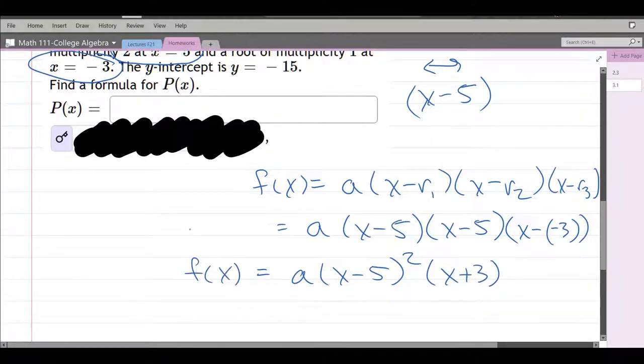So we do have degree 3. The y-intercept is negative 15, we're about to use that. What does that mean? That means when you take x equals 0 and plug into the function, you get negative 15.